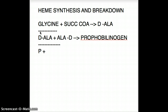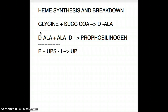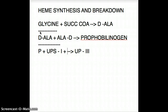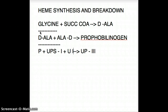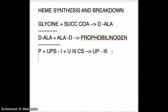Now we have our porphobilinogen, and this is going to combine with uroporphyrinogen synthase I to give us uroporphyrinogen III. You must be wondering why there is a three here even though there is a one — another compound, uroporphyrinogen III cosynthase, is also involved. That's the three we're seeing in uroporphyrinogen III.